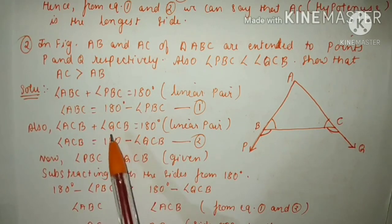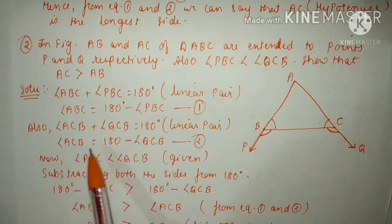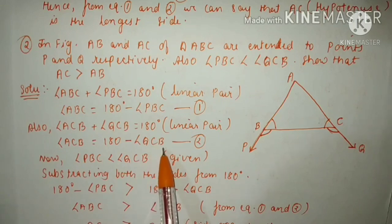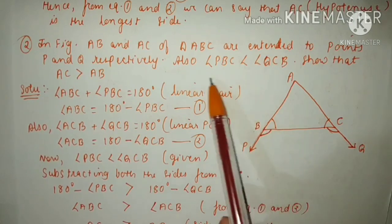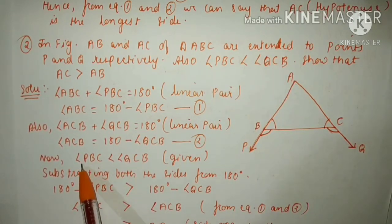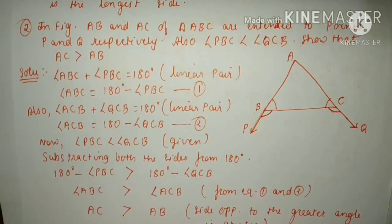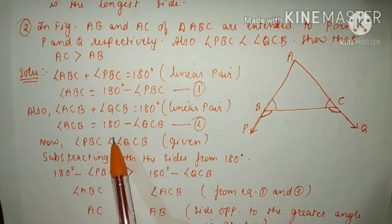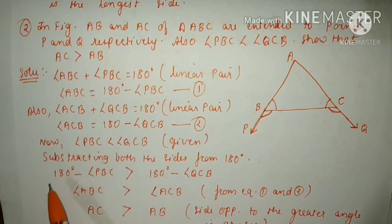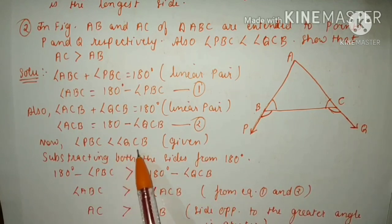Transposing QCB to the right hand side gives angle ACB equals 180 degrees minus angle QCB. Name this as equation number 2. It is given that angle PBC is less than angle QCB. Now we will subtract both sides from 180. When we subtract, the less than sign will become greater than: 180 minus angle PBC will be greater than 180 minus angle QCB.